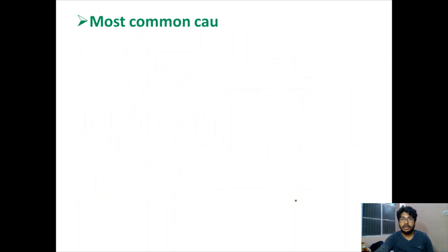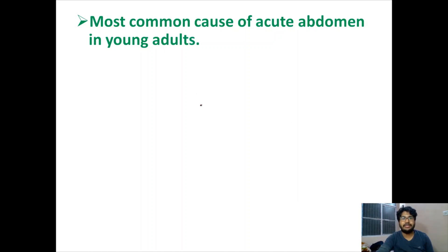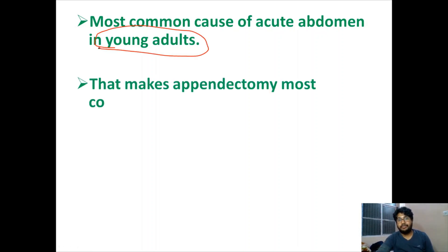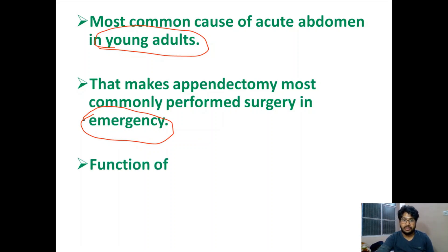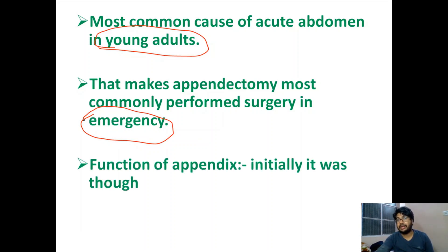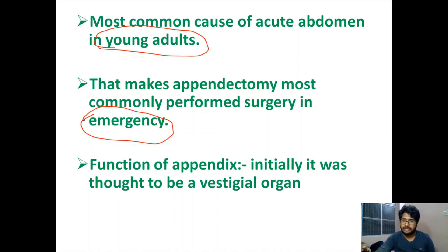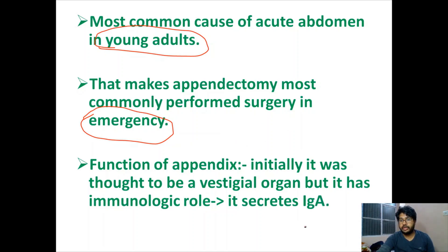The most common cause of acute abdomen in young adults is appendicitis, and this makes appendicectomy the most commonly performed surgery in emergency. Regarding the functions of the appendix — although it was initially taught that it is a vestigial organ, it secretes IgA (immunoglobulin A).